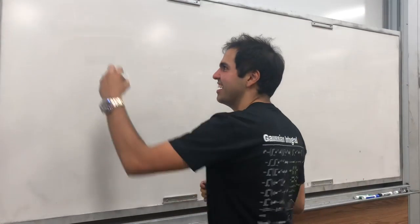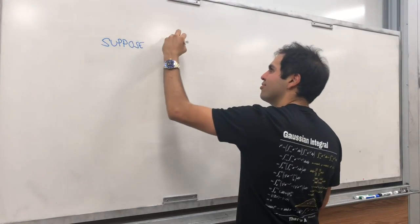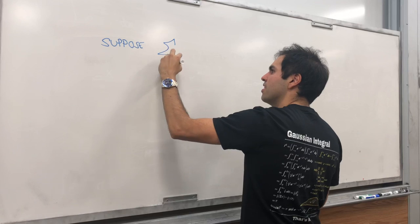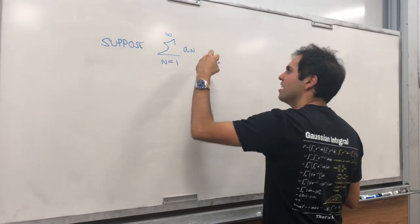Suppose you have a series, from 1 to infinity, sum as n goes from 1 to infinity, a_n. This right here diverges.